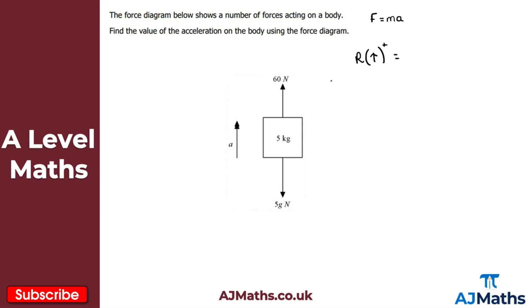So resolving here if I'm taking up as positive then my force here is 60 newtons that will be positive. That's 60. This force here of 5g that's going down that will be negative. So 60 minus 5g. So that's my force there. That's F and that's going to be equal to the mass. So that's 5 times the acceleration which is a.